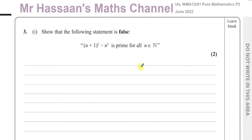The natural numbers are the numbers that you count with, starting from 1, 2, 3, 4 — the whole numbers, basically the positive integers. They don't include 0; you start from the number 1 and go up in 1s.